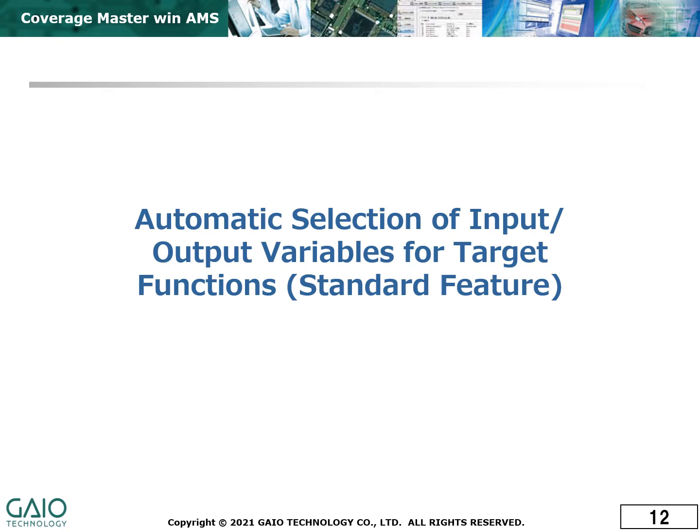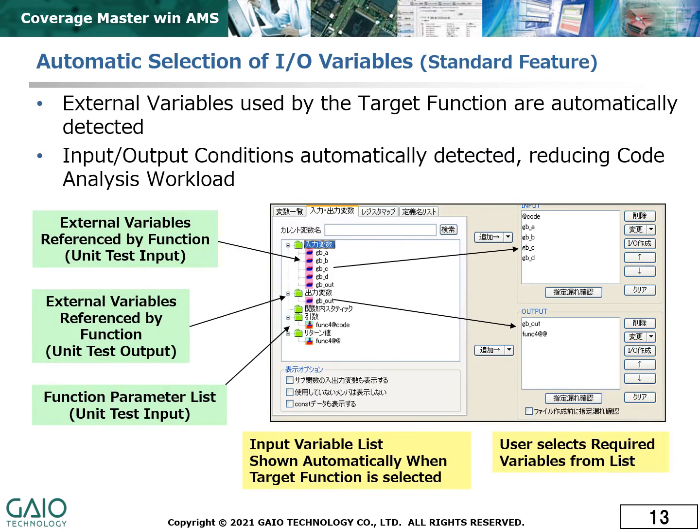One of the strengths of CoverageMaster WinAMS is the ability to automatically select variables for use in testing the target functions. The source code is analyzed to determine which input variables impact the output of the function, and the user can then select which ones to use in the unit test.